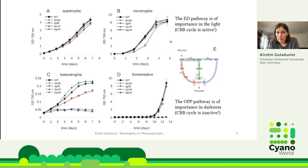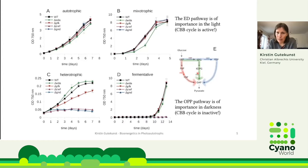We were interested to know under which conditions and which of these routes are actually of importance. We made a lot of deletion mutants — we knocked out key enzymes of the different pathways. To interrupt the OPP pathway, we knocked out either ZWF or GND. To knock out the EMP pathway, we knocked out PFK. To knock out the ED pathway, we knocked out EDA. We then analyzed these deletion mutants under different growth conditions.